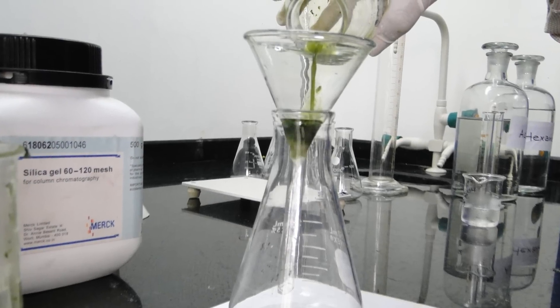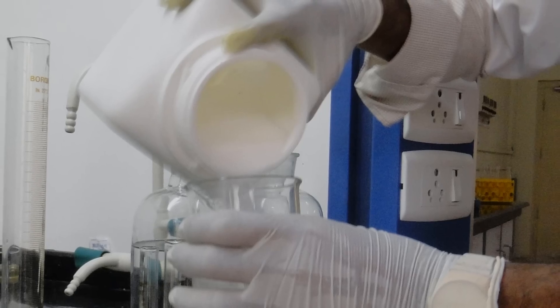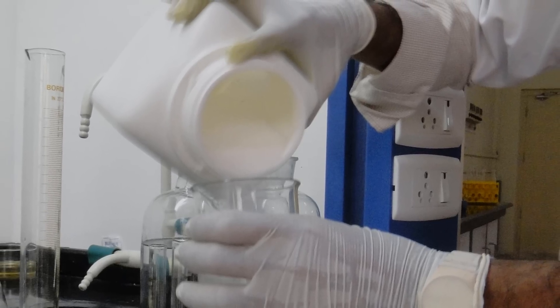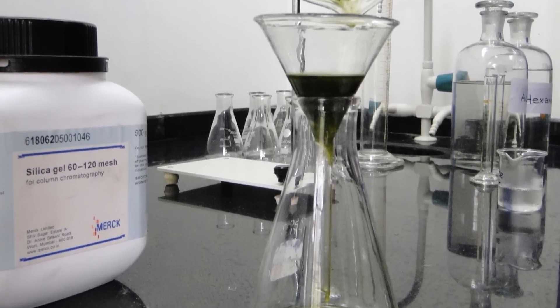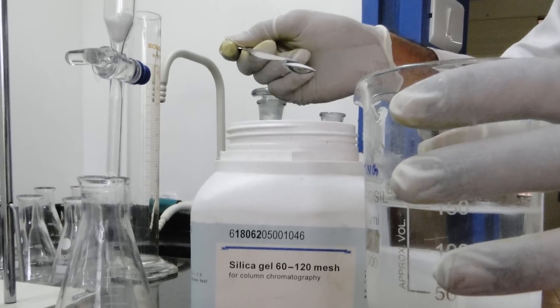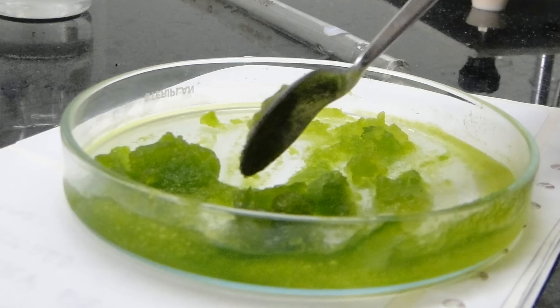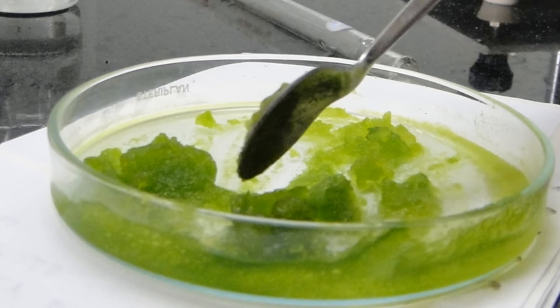This crude extract is filtered and anhydrous sodium sulfate is added to remove the traces of water. This extract is once again filtered and adsorbed on about 3 grams of silica gel and dried to afford a free flowing silica gel with the crude extract adsorbed on it.